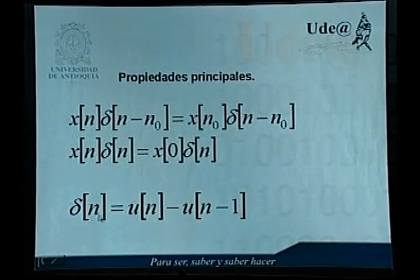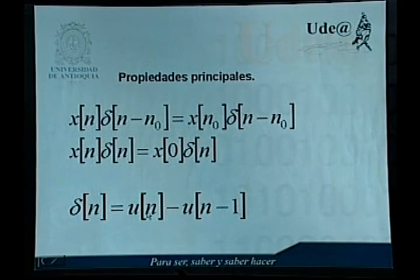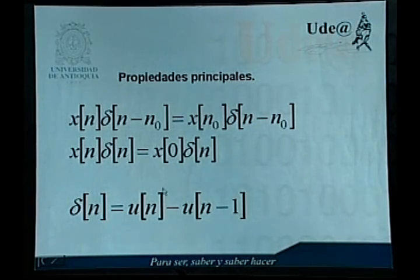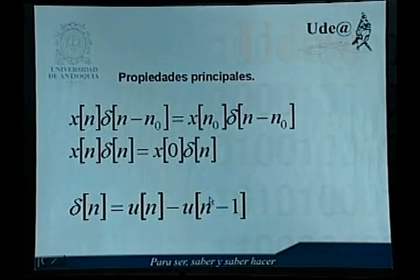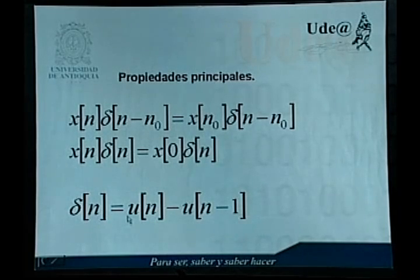Otra propiedad que cumplen estas funciones es la siguiente: delta de n es igual a u de n menos u de n menos 1. Esto nos indica que la función impulso unitario se puede ver como la diferencia de dos funciones de escalón unitario: la función de escalón unitario evaluada en n y la función de escalón unitario evaluada en n menos 1. Esta propiedad es muy fácil de ver que se cumple: la función u de n vale 0 antes de 0 y 1 de n igual a 0 en adelante, y u de n menos 1 lo hace a partir de n igual a 1 en adelante. Si tomamos entonces la diferencia obtenemos que esto siempre es 0 excepto en el valor n igual a 0 donde vale 1, coincidiendo con la definición de la función de impulso unitario.